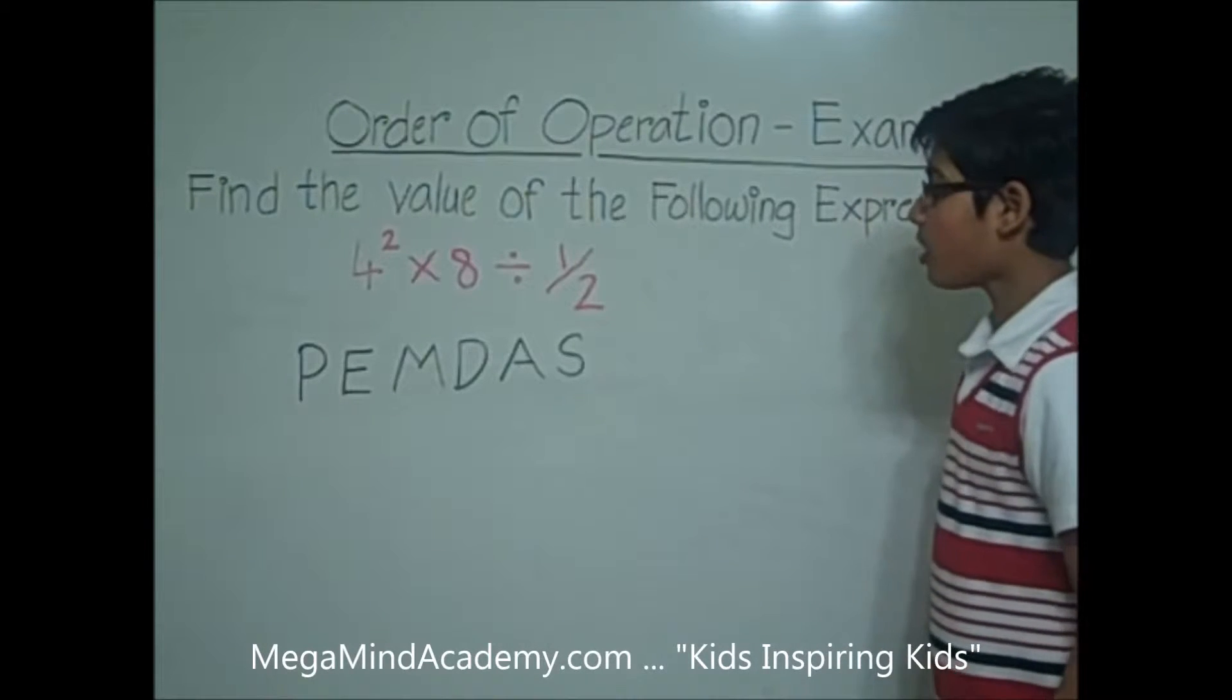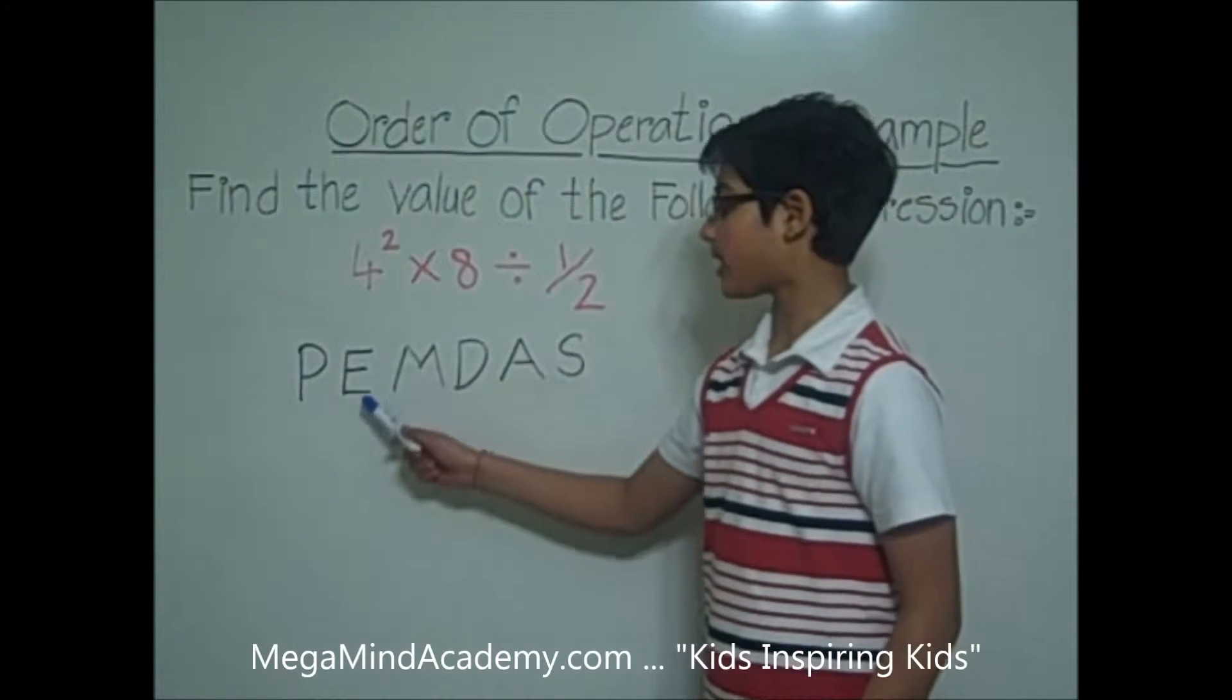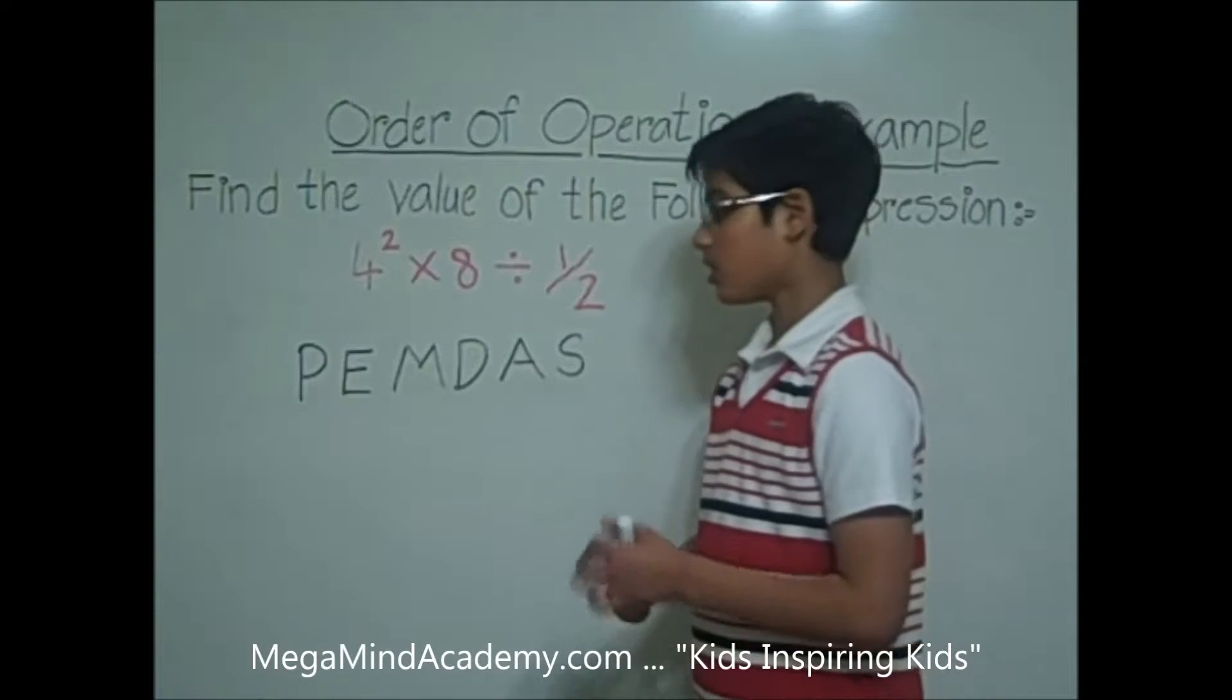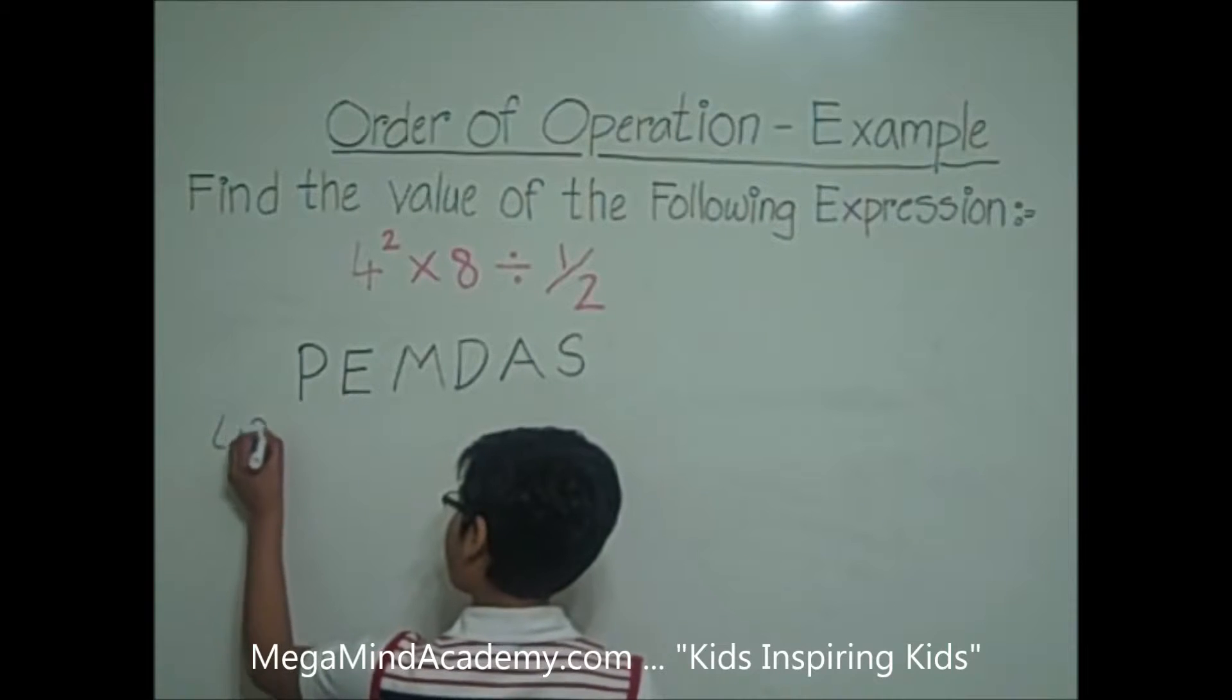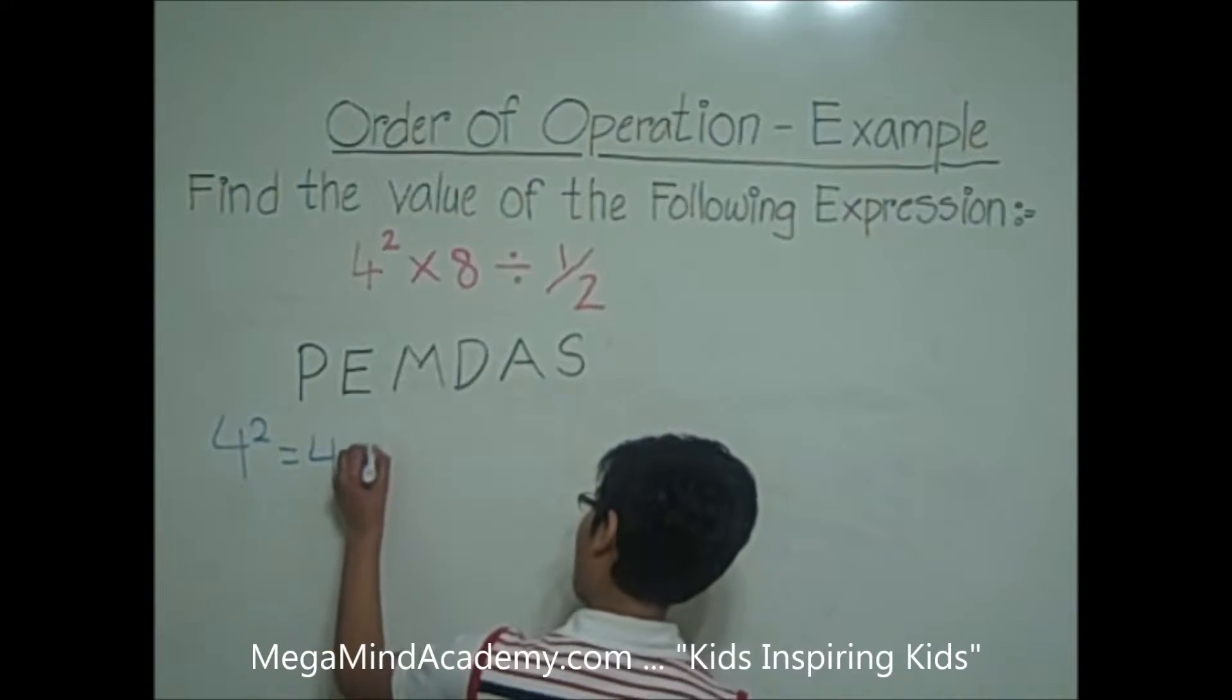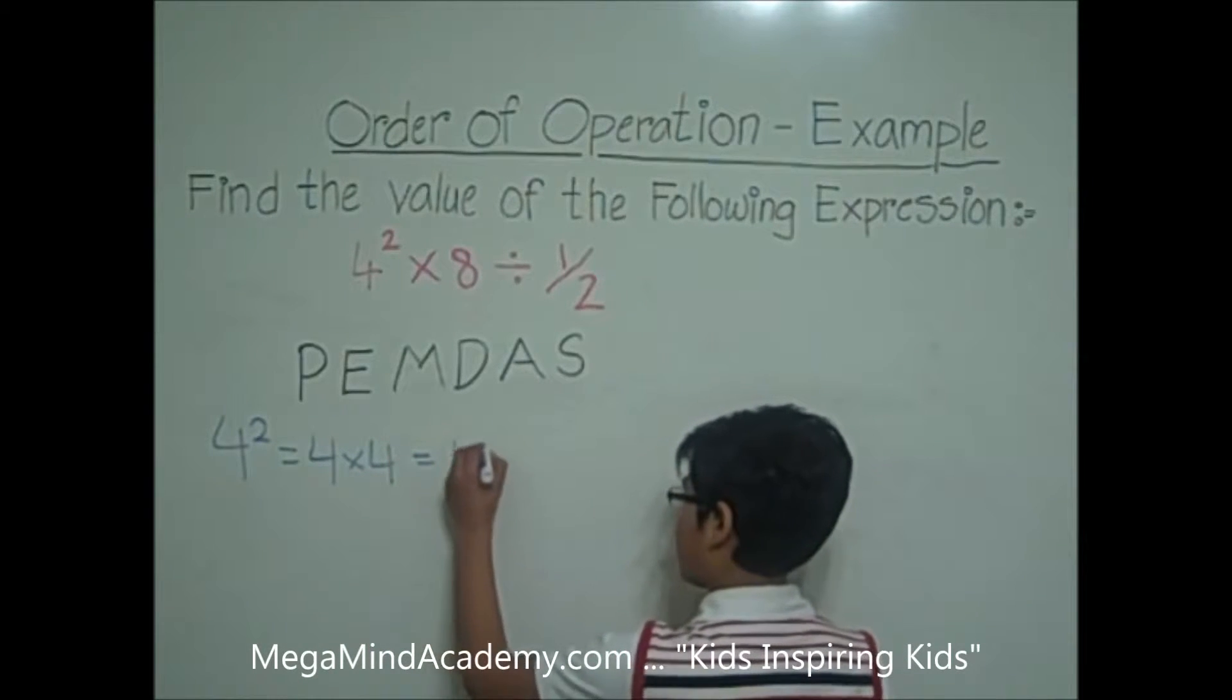There are no parentheses in this expression, but there are exponents. 4 squared. So, let's write down that 4 squared is equal to 4 times 4. 4 times 4 is equal to 16.